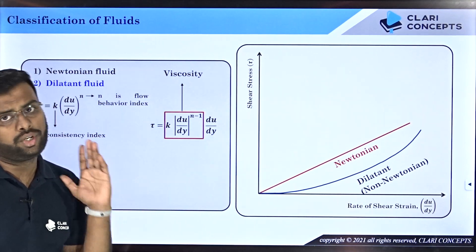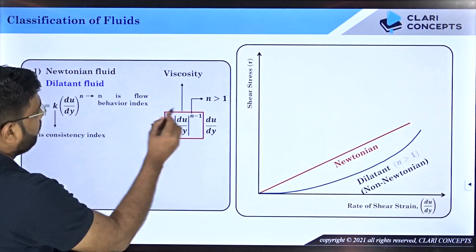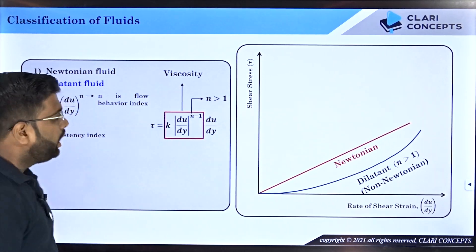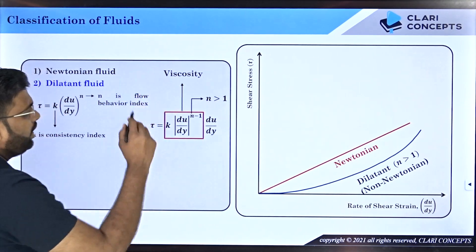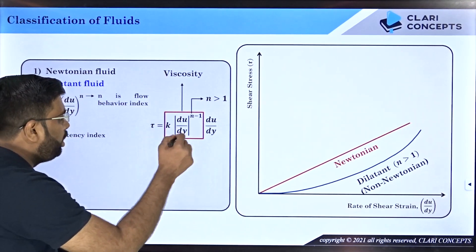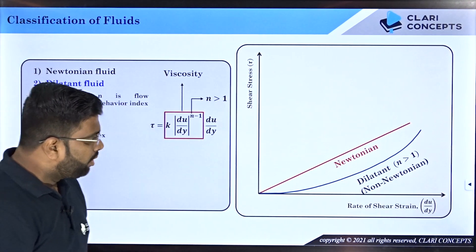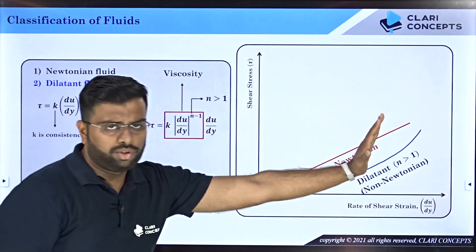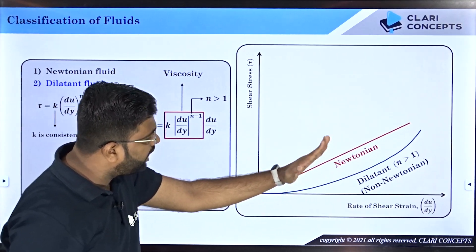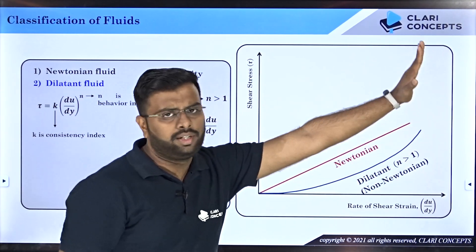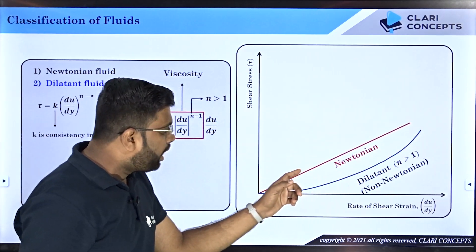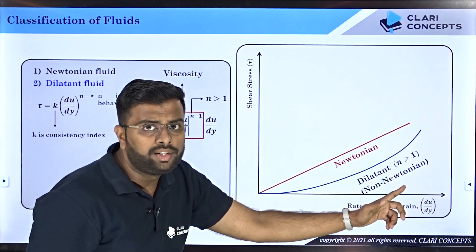For dilatant fluids, the value of n is always greater than 1. That means n−1 is a positive number, so as du/dy increases, the overall viscosity also increases. If you draw tangents at different points along the curve, you will see the slope gradually increasing, confirming that at higher rates of shear strain the viscosity of such fluids is higher.